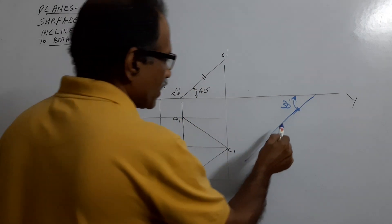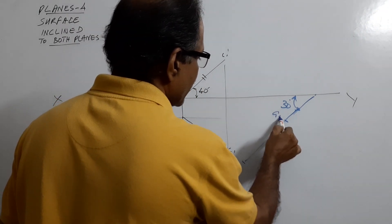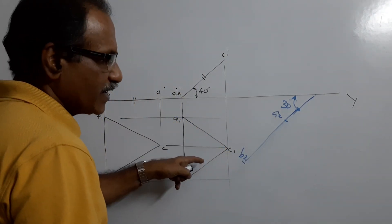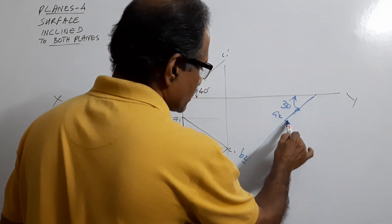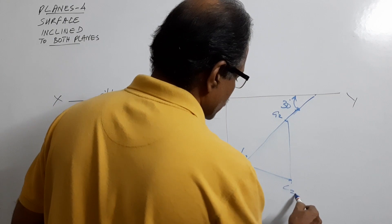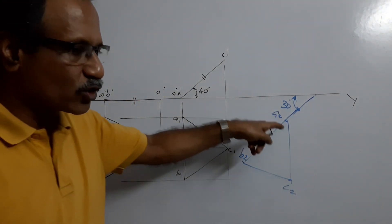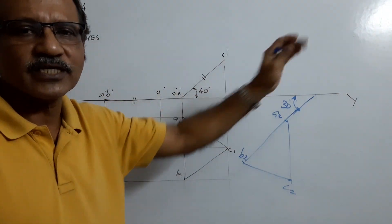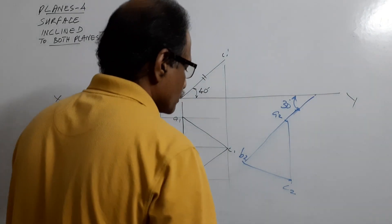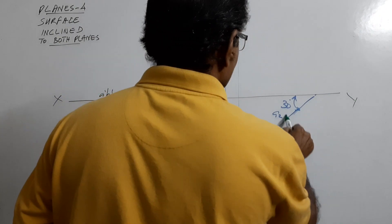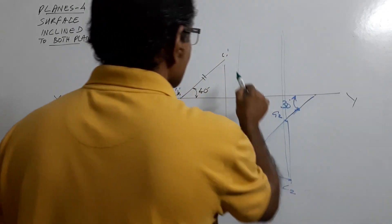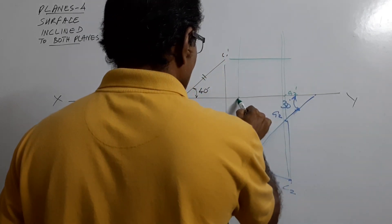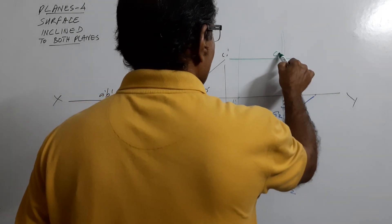Take the length A1B1 and mark it on the 30 degree line — you get A2, B2. This length is equal to this length. Take it in your compass and draw arcs to get the third corner C2. A1B1C1 is redrawn here as A2B2C2 — same shape, same size, but different orientation. Draw vertical projectors up and horizontal projectors to get a new elevation. Connect A2 dash, B2 dash, C2 dash.